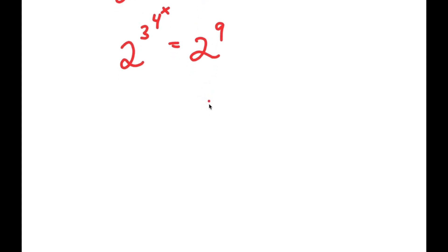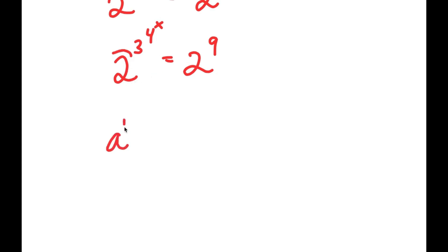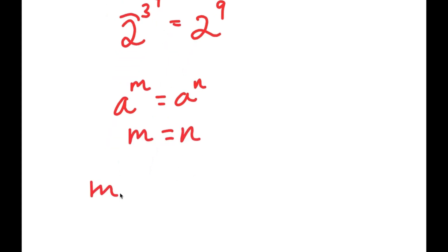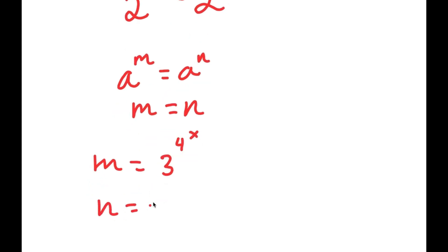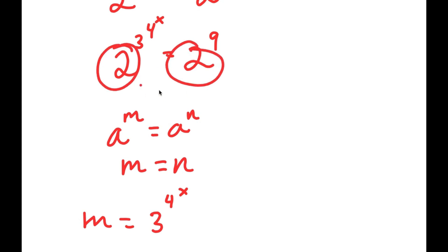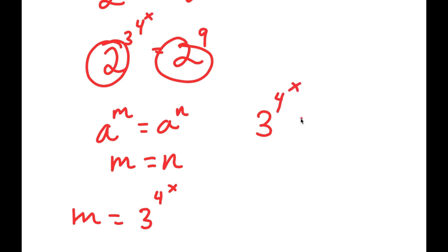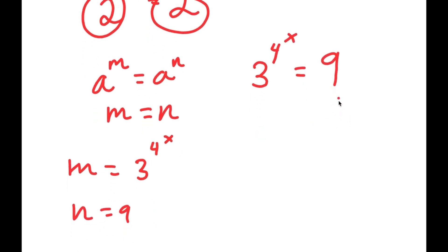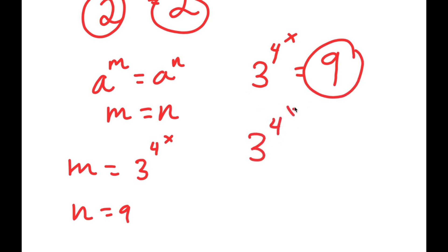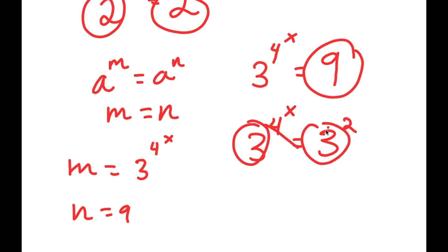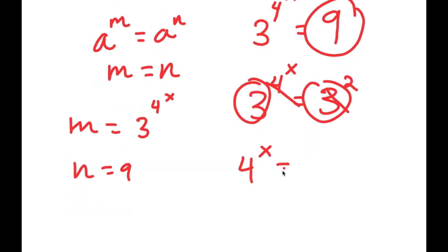Since both sides now have base 2, I can equate the exponents: 3 to the power of 4 to the power of x equals 9. Since 9 equals 3 squared, I have 3 to the power of 4 to the power of x equals 3 squared. Equating exponents again gives 4 to the power of x equals 2.